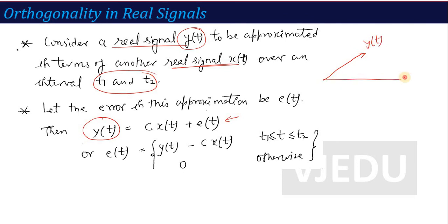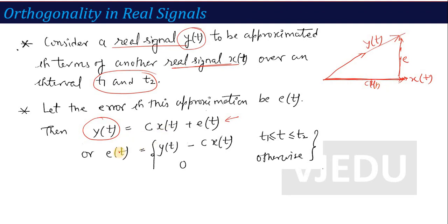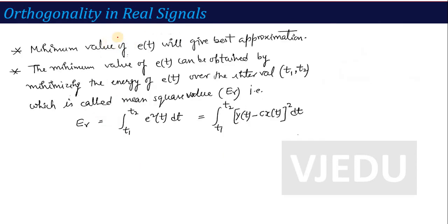We say that y(t) is being projected in the direction of x(t) — y(t) is approximated in terms of another signal x(t). So y(t) = c·x(t), but there will also be some error signal. By vector addition law, c·x(t) plus the error e equals y(t). The actual projection occurs when the error signal is minimized — that is when y(t) can align with the direction of x(t). So the error signal is y(t) minus c·x(t) during this interval; outside it is zero. To get the best approximation, we need to minimize this error over the interval.